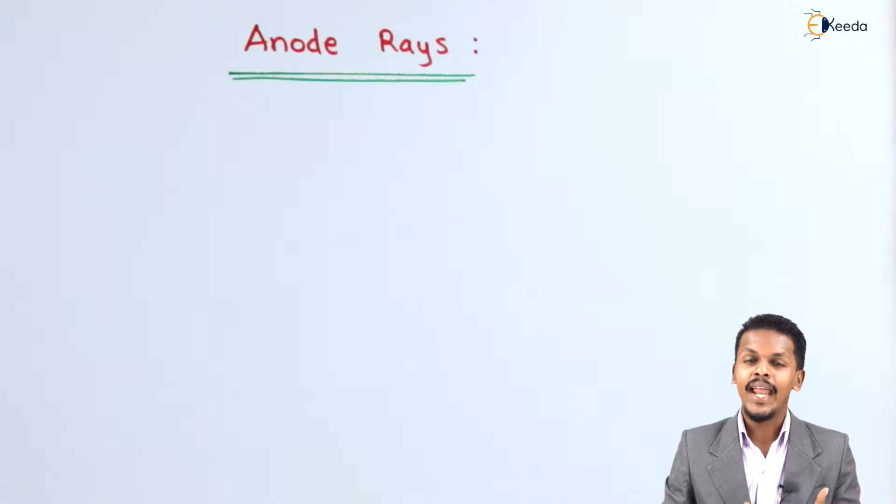So friends, to form anode rays, the thing that we need is the setup that we discussed in the previous one, that is, the cathode ray discharge tube.